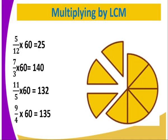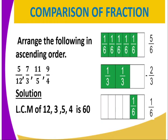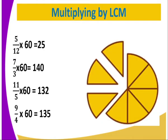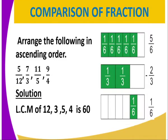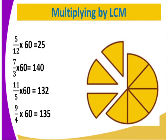So what we normally do, once you get the denominator, you multiply each by the LCM. So you get 5 over 12, you multiply it by 60 to get 25. And also our 7 over 3, you also multiply it by 60 to get 140. You also get 11 over 5, you multiply it by 60 to get 132. And you also get 9 over 4, you multiply it by 60 to get 135.